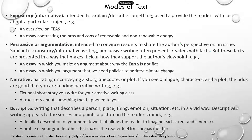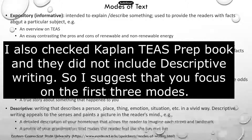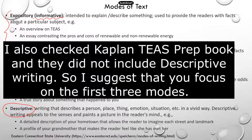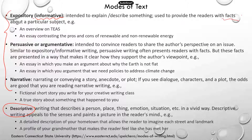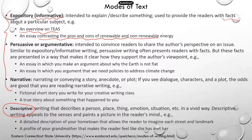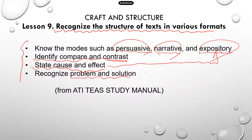I listed the four modes of text required by TEAS. In the TEAS study manual, there's really not a very clear description on the descriptive type of passage. First, expository — the writer tries to explain something. It's also known as informative. It's used to provide readers with a fact or explanation of why something happens. For example, why lightning happens, or why you see lightning before you hear thunder. Or it could be an overview on TEAS, giving out information on what TEAS is about. Or it could be an essay contrasting the pros and cons of renewable versus non-renewable energy — that goes back to the compare and contrast learning objective.